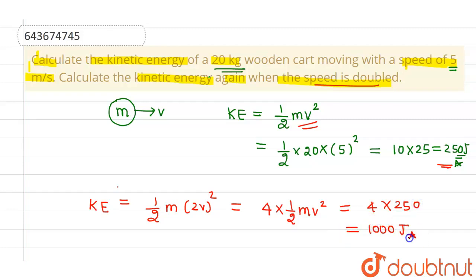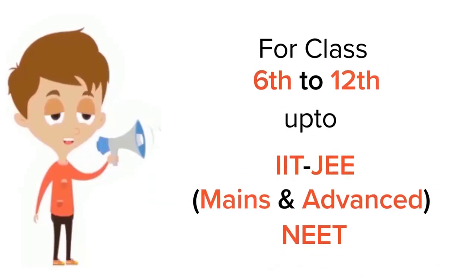So 1000 joules is the answer when the speed is doubled. I hope you understood, thank you.